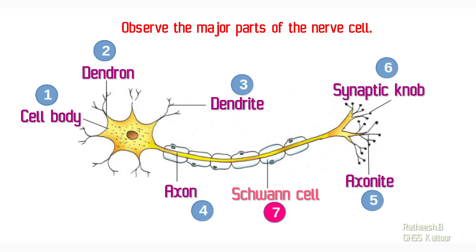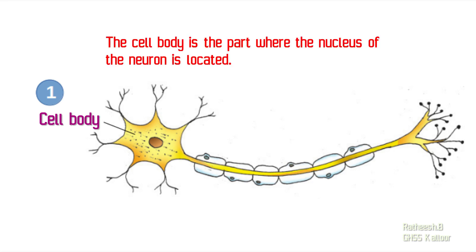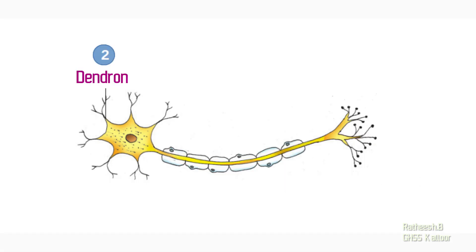Now let us examine each part of the neuron in detail. The first part of a neuron is the cell body. You can see the cell body in this picture. It is the part of the neuron where its nucleus is situated. It is the functional center of a nerve cell.